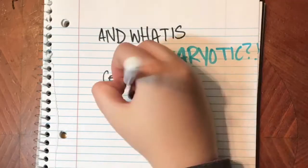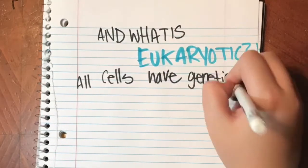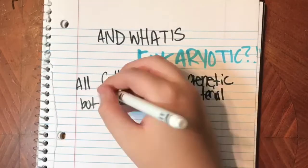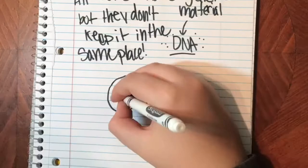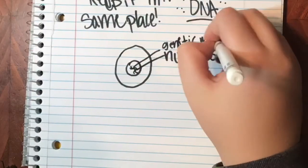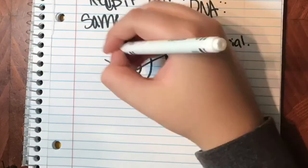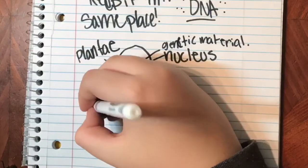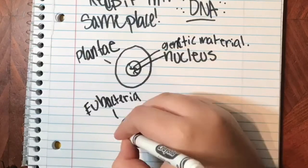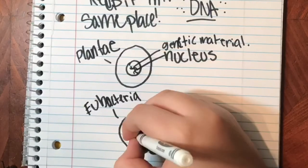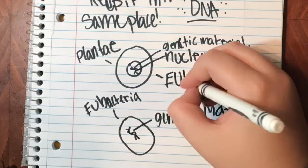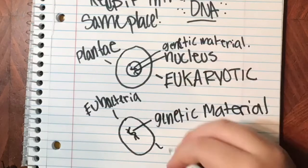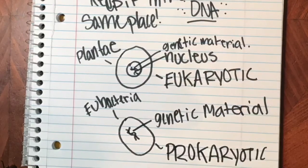And what is eukaryotic? All cells have genetic material, but they don't keep it in the same place. For example, Plantae keeps the genetic material inside the nucleus, and Eubacteria keeps the genetic material just floating around in the cell. Because Plantae has a nucleus, that makes it eukaryotic, and because Eubacteria doesn't, that makes it prokaryotic.